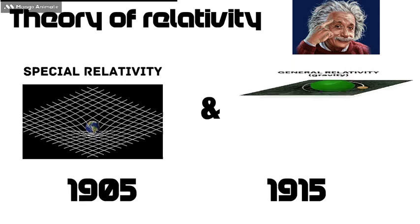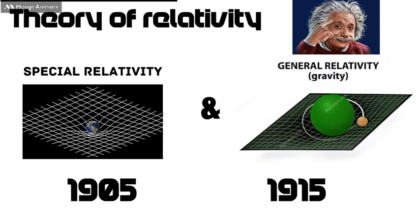Theory of relativity. Relativity is made up of two interrelated theories given by Albert Einstein, namely special relativity and general relativity, in the years 1905 and 1915.